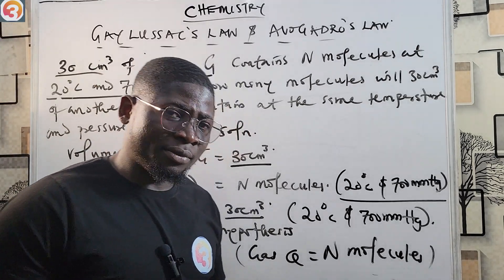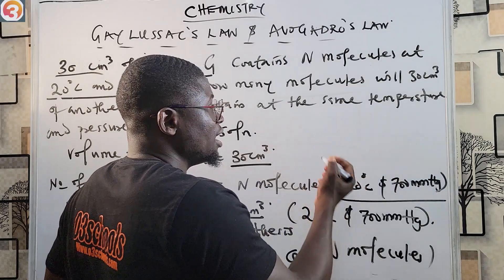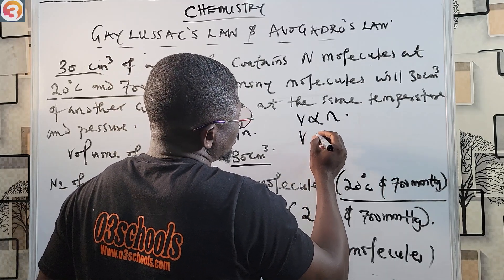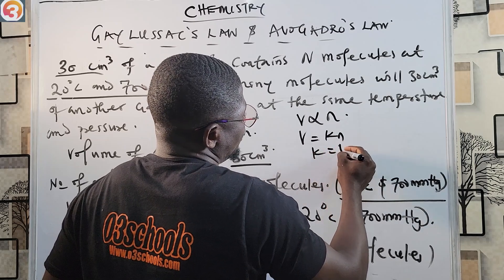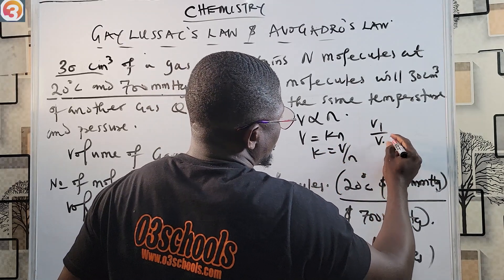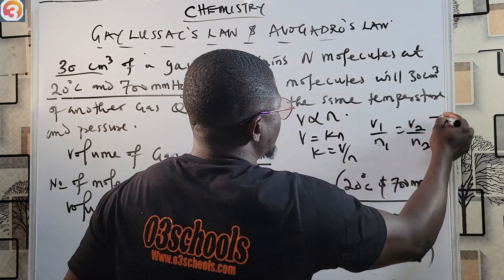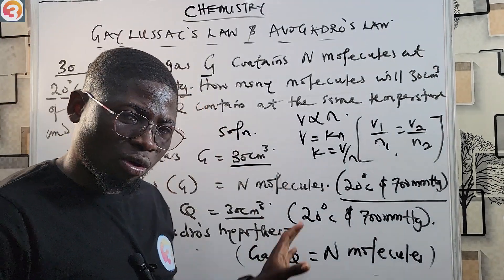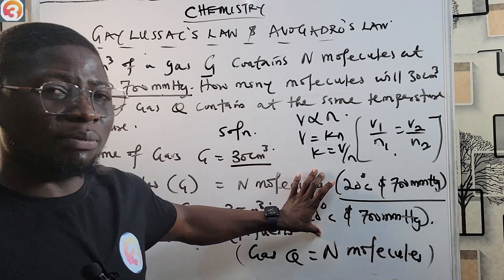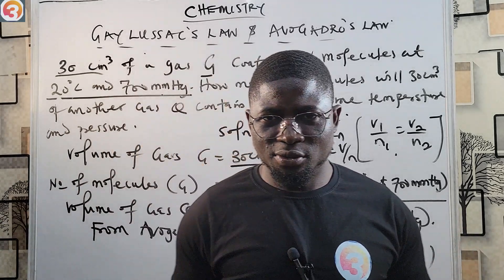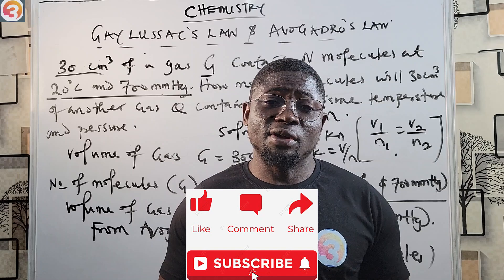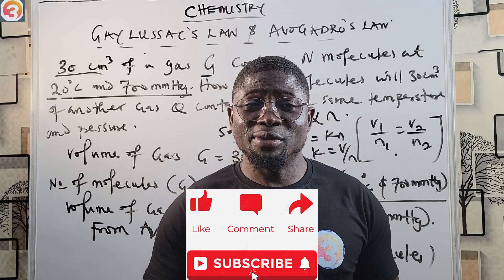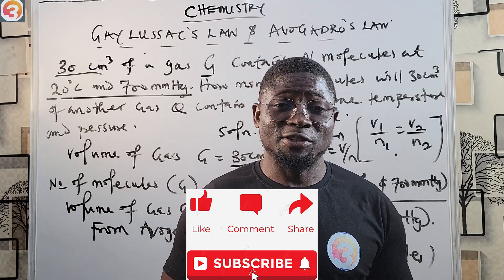If the volumes were different, you would use the mathematical relationship V₁/n₁ = V₂/n₂. But since the volumes are equal under the same conditions of temperature and pressure, the number of molecules will be the same. This is where I'll stop today on Gay-Lussac's Law and Avogadro's Law. Please follow the previous episodes and future episodes, and you'll be smiling on your exam day. Thanks for watching and I'll see you in the next class.